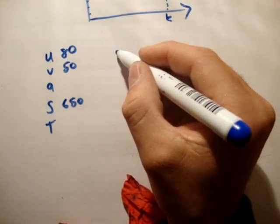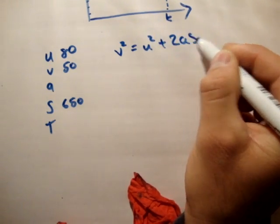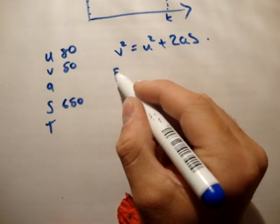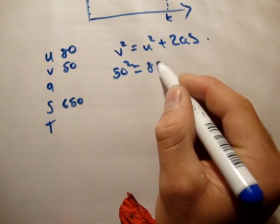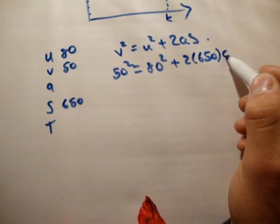So v squared is equal to u squared plus 2as, that'll do. So 50 squared is equal to 80 squared plus 2 times 650 times a.